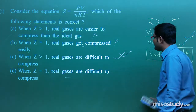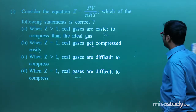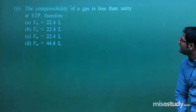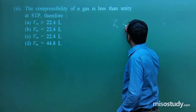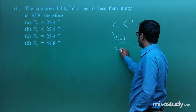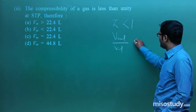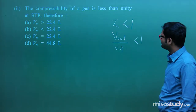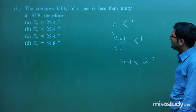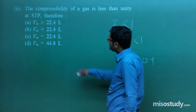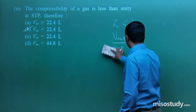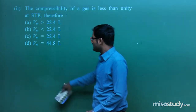Consider the statement: when Z > 1, real gases are easier to compress than ideal gas. We know Z = V_real / V_ideal. If Z > 1, then V_real > 22.4 L, meaning it is not more compressible — rather, it is more difficult to compress. So that option is incorrect. When Z > 1, real gases are difficult to compress. The correct statement is option C.